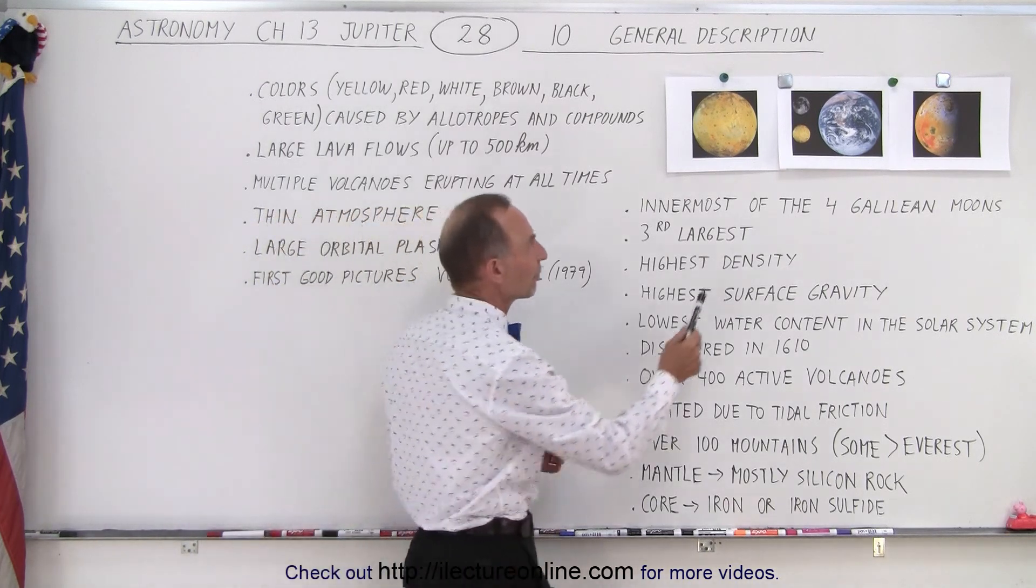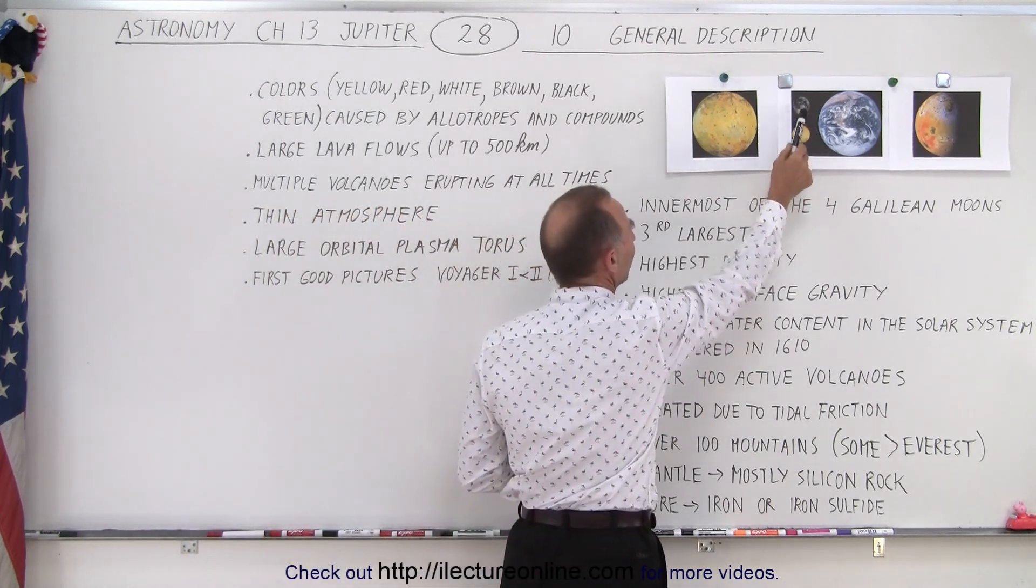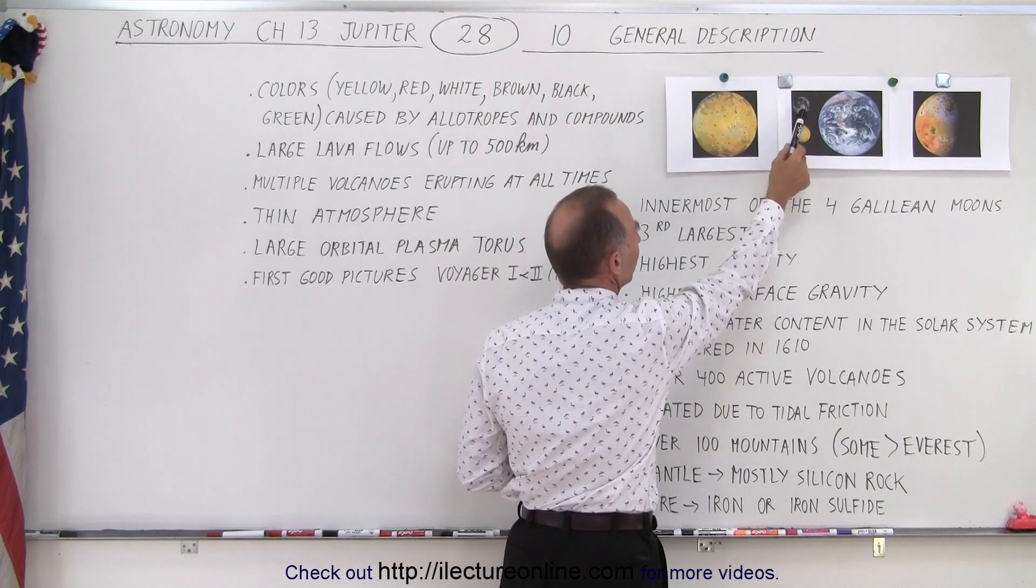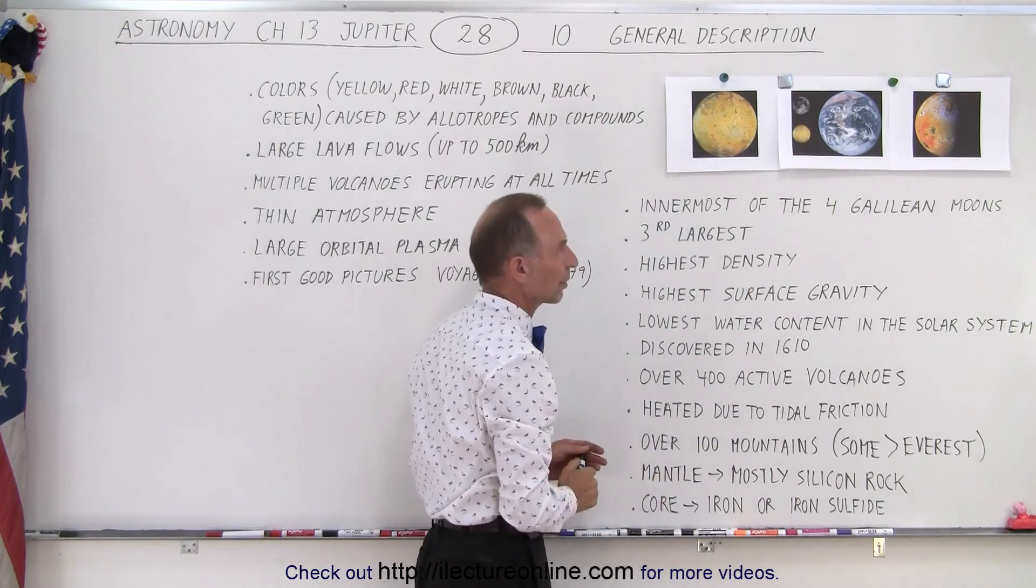If you compare the size of Io to the size of our moon, they're very similar in size, just slightly larger than our moon, compared to the size of the earth.